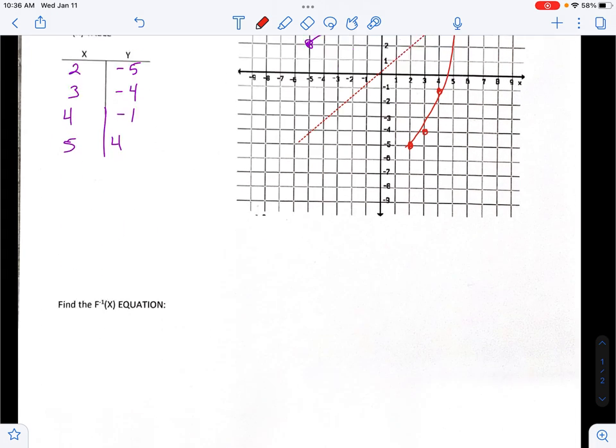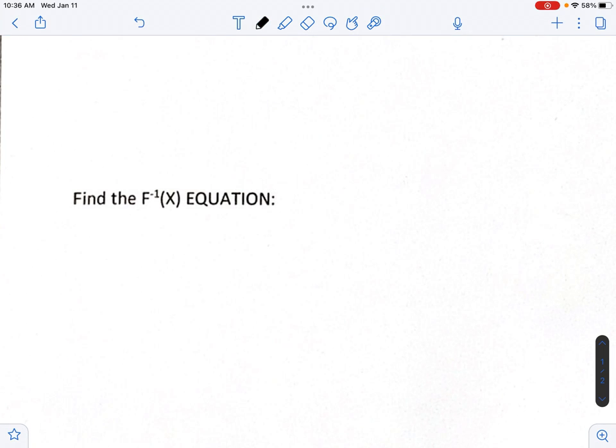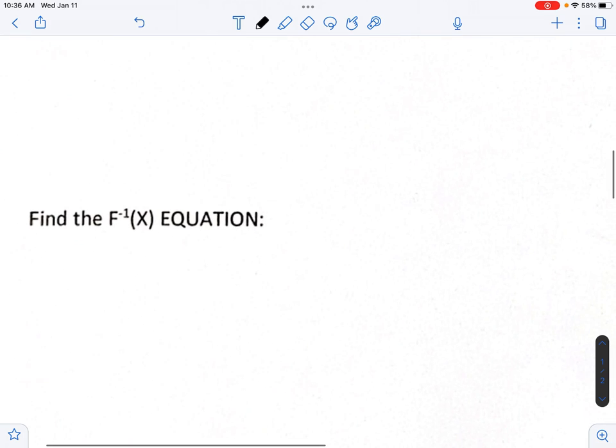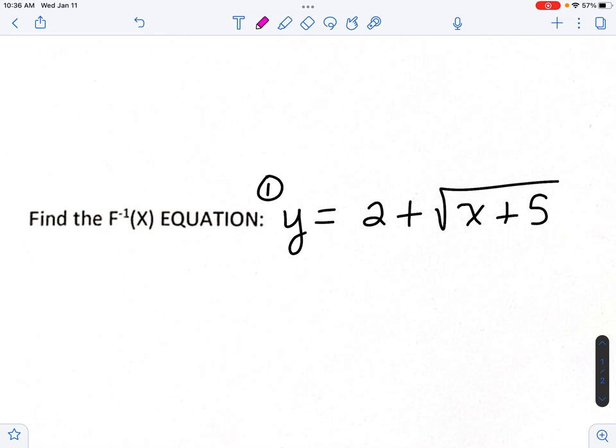Now let's find the inverse equation using the paper method. So step 1 is to take the equation and write it in terms of y equals. So we'll say y equals 2 plus the square root of x plus 5. So that's step 1. Step 2, switch out x and y very similarly like we did in the table, except we're using variables instead of numbers. So step 2, we're going to say x equals 2 plus the square root of y plus 5.